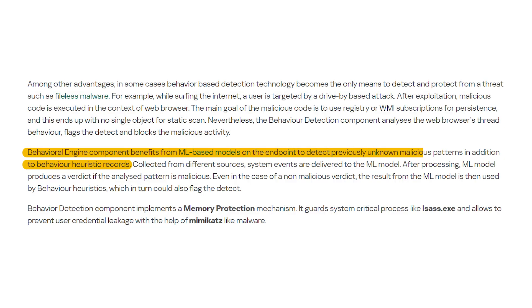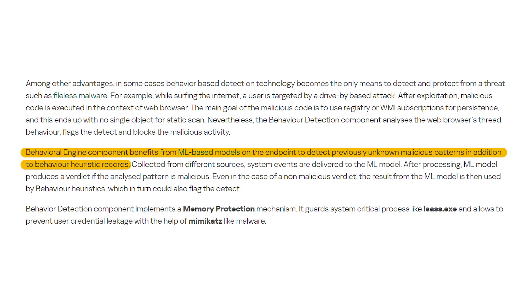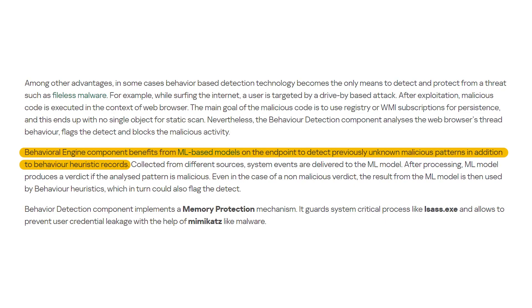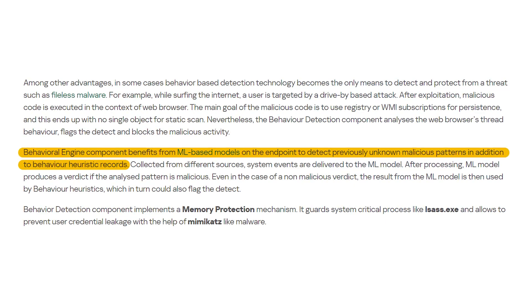Next, we have heuristic analysis and machine learning. Behavioral analysis often incorporates heuristics and machine learning algorithms to identify deviations from expected software behavior. These algorithms allow the system to learn and adapt to emerging threats, making it more effective at identifying unknown malware. If you'd like to know more about heuristics, I've talked about this in detail in a separate video, which I'll leave in the description as well.